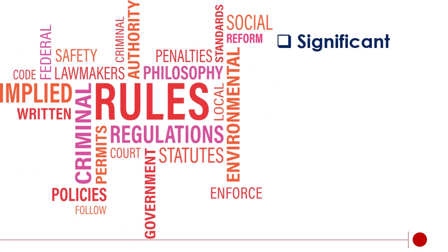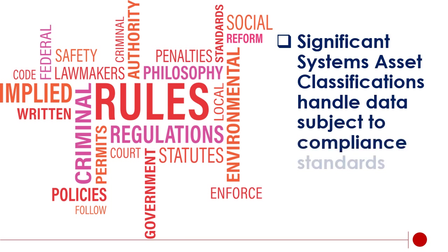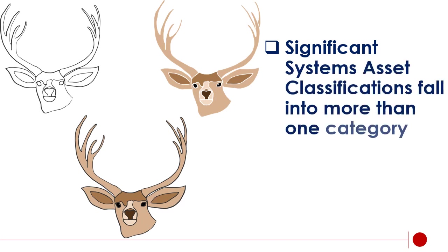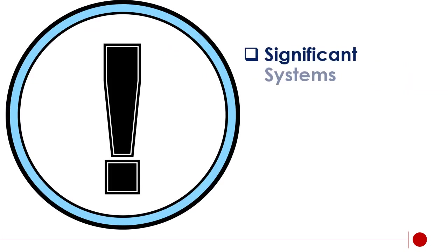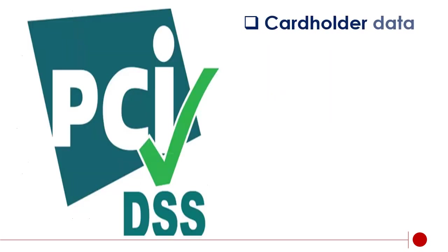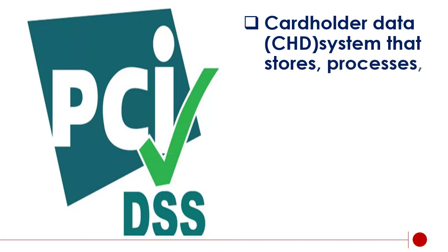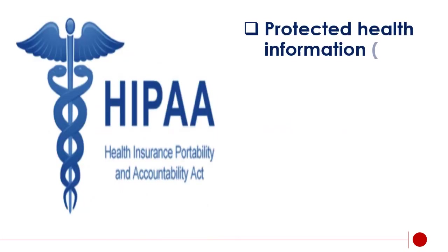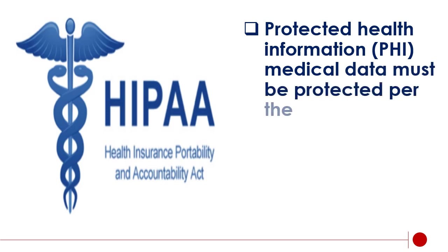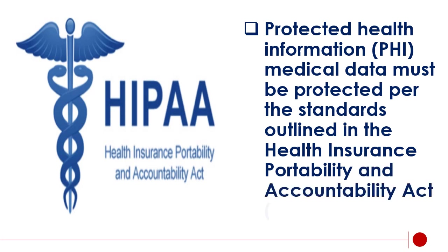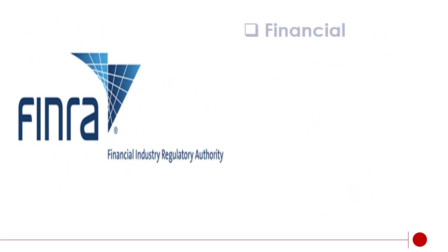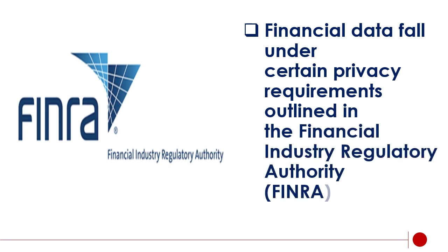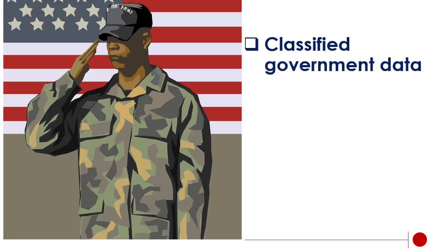Significant Systems asset classifications handle data subject to compliance standards and may fall into more than one category or stand alone. Examples include cardholder data (CHD) — systems that store, process, or transmit CHD must align to PCI DSS. Protected health information and medical data must be protected per the standards outlined in the Health Insurance Portability and Accountability Act (HIPAA). Financial data falls under certain privacy requirements outlined in the Financial Industry Regulatory Authority (FINRA). Classified government data applies to U.S. military and government.